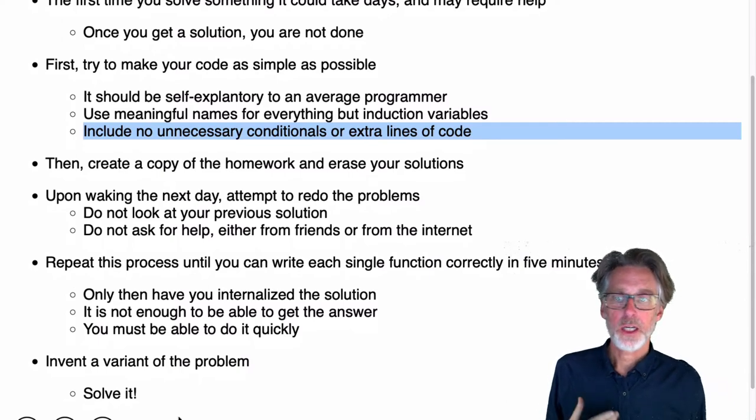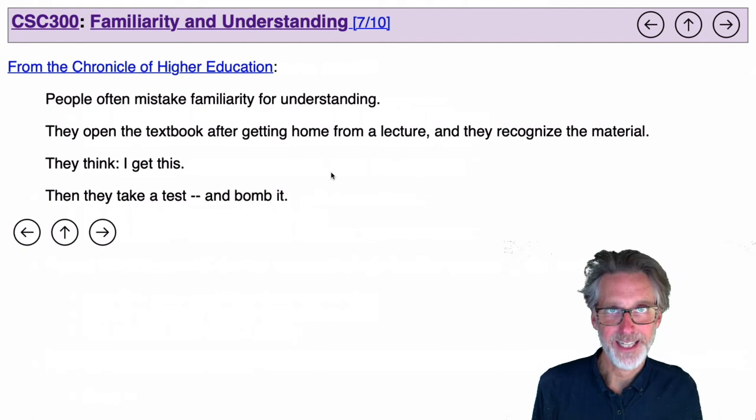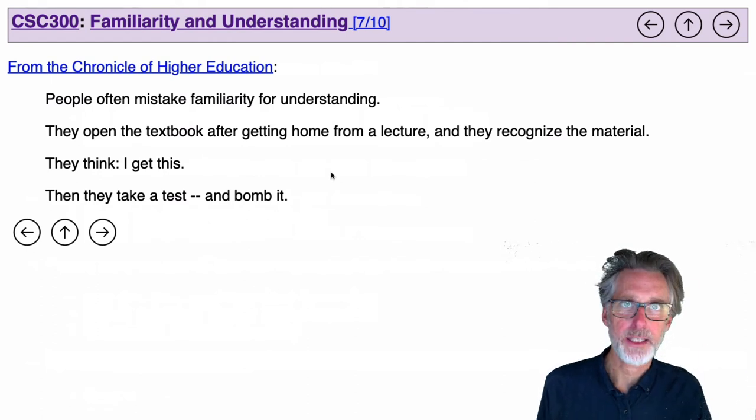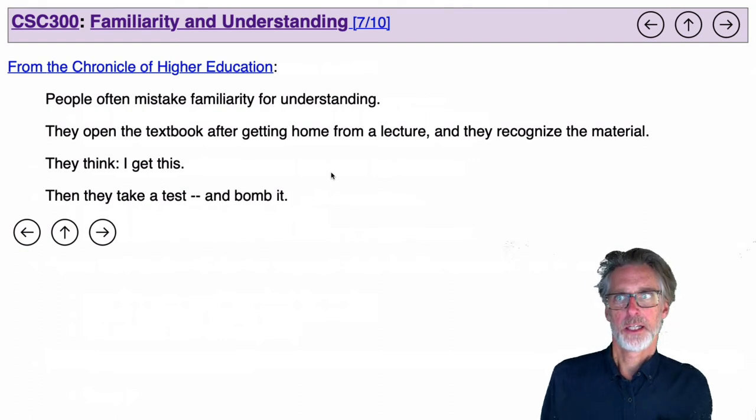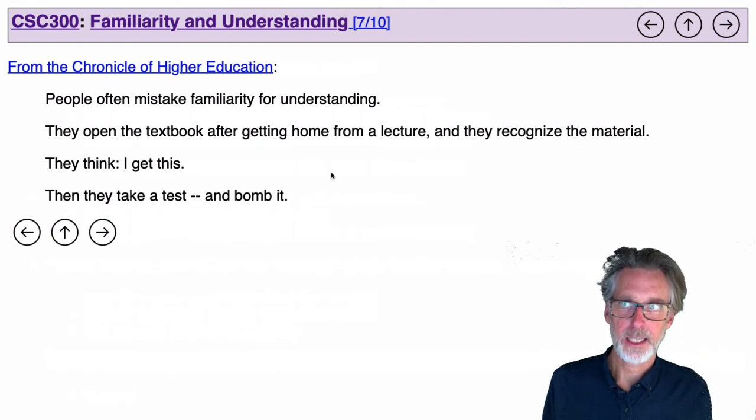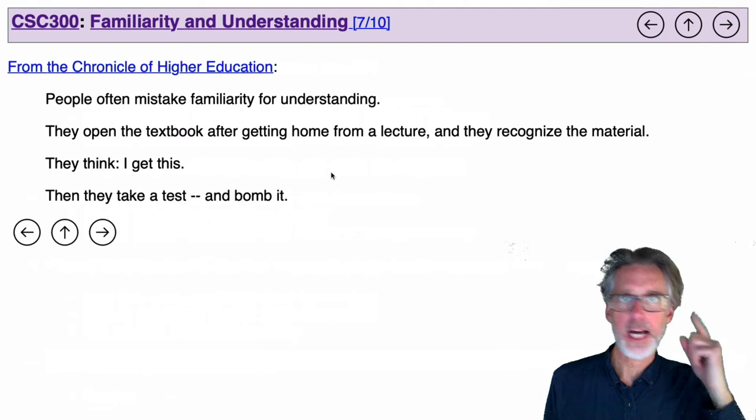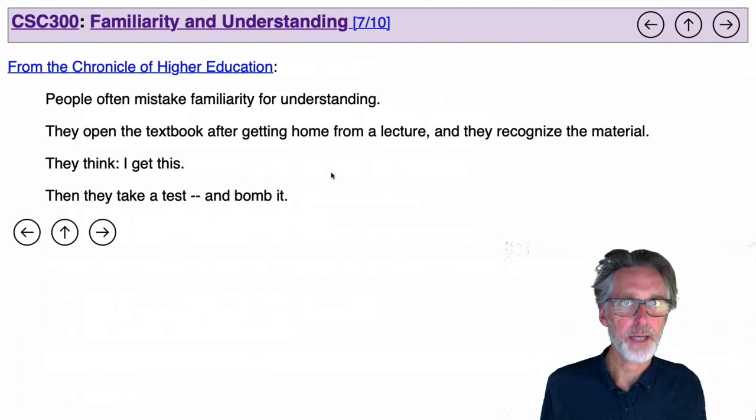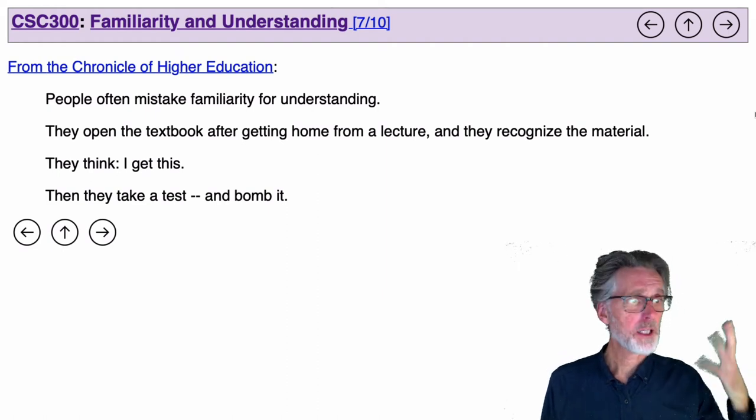To consolidate even more, you can come up with a small variation of the problem and then solve it. What I'm getting at here is the difference between familiarity and understanding. You might see a solution to a loop. You might recognize the code in the book and you're like, yeah, I know that's right. I know how to do that. That doesn't mean that you can actually do it yourself. People often mistake familiarity and understanding. They open the textbook after getting home from a lecture. They recognize the material. They think, I get this. If you follow my suggestions for the homework, this will not happen to you. If you can do every homework problem in five minutes or less, then you've really learned the material and you'll be able to repeat it on an exam.